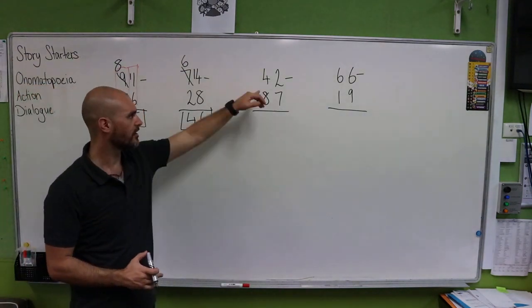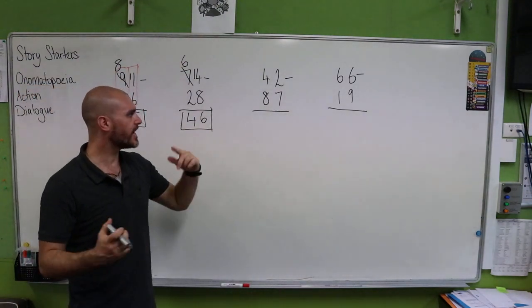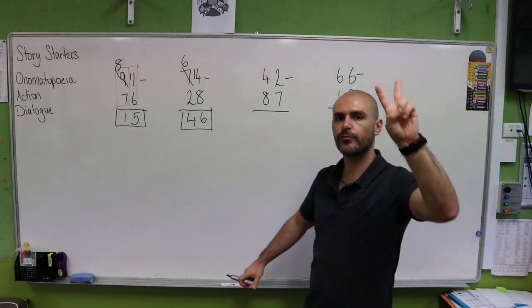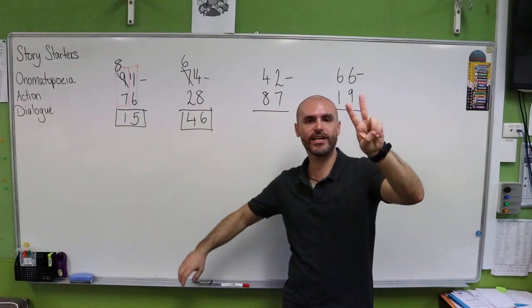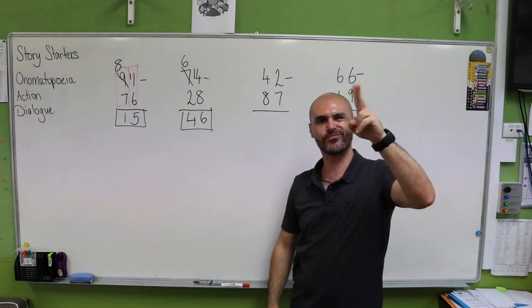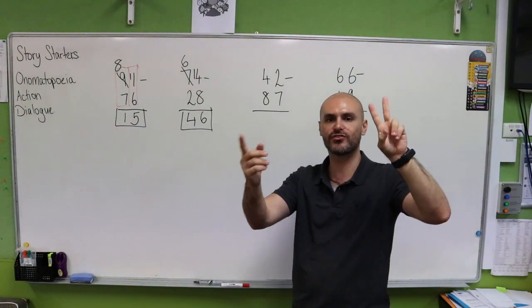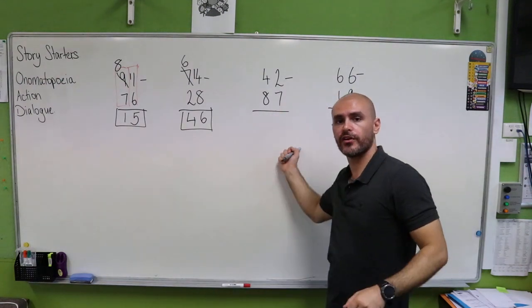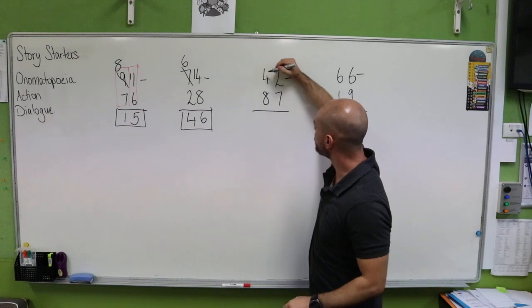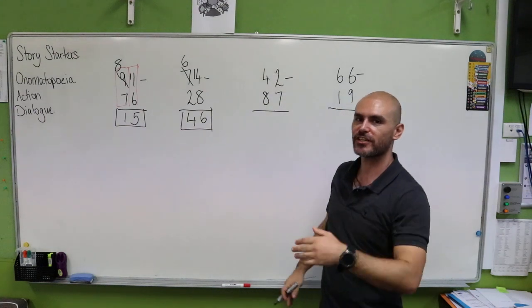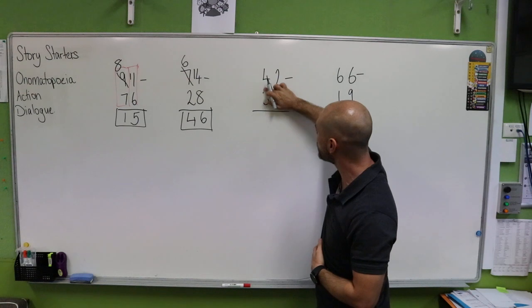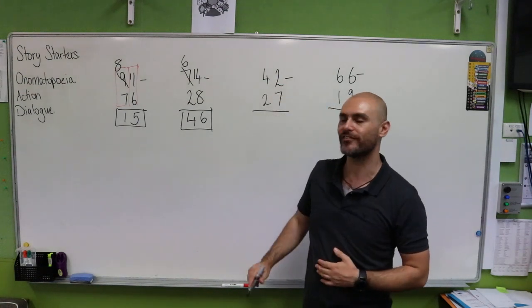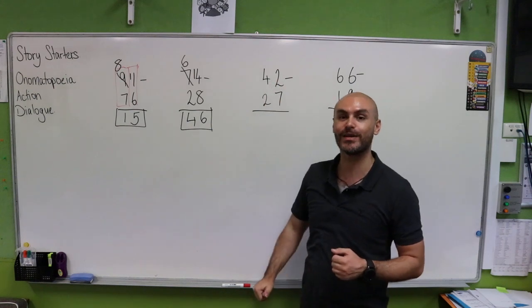We're going to try that again. 42 take away 87. If we have two, can we get seven out of two? No, we can't because two is smaller than seven. So we're going to have to knock next door. I'm going to change this number because I realize it's going to be a bit too difficult and I wrote the wrong number. I meant to write 27. 42 take away 27.